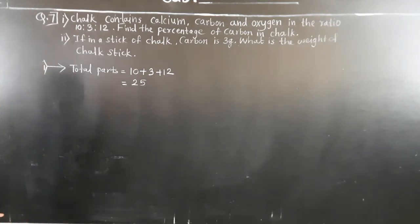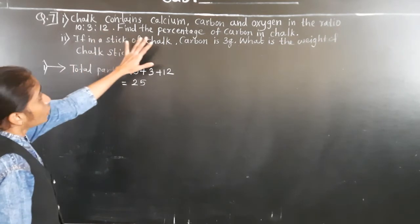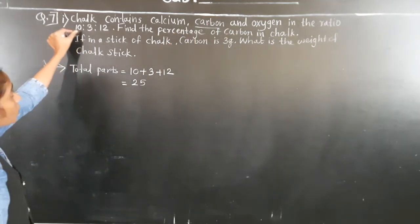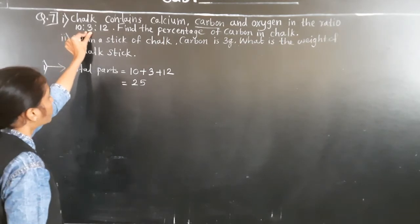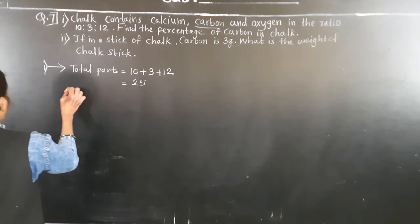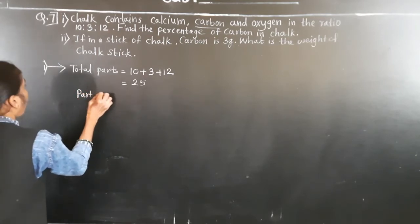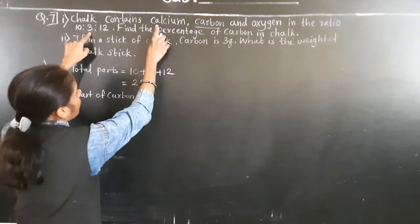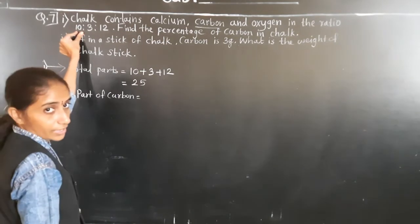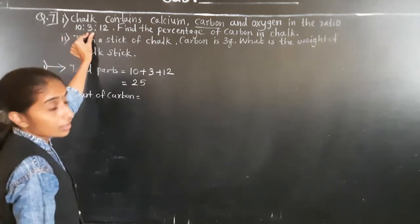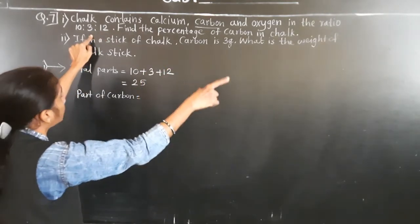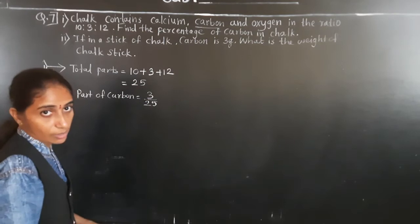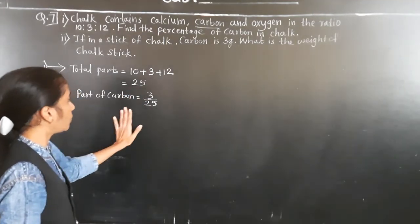So what we have to find? The percentage of carbon. What fraction will come for carbon? Part of carbon — calcium is 10, carbon is 3, and oxygen is 12. So carbon is 3 out of 25. Part of carbon is 3 upon 25.